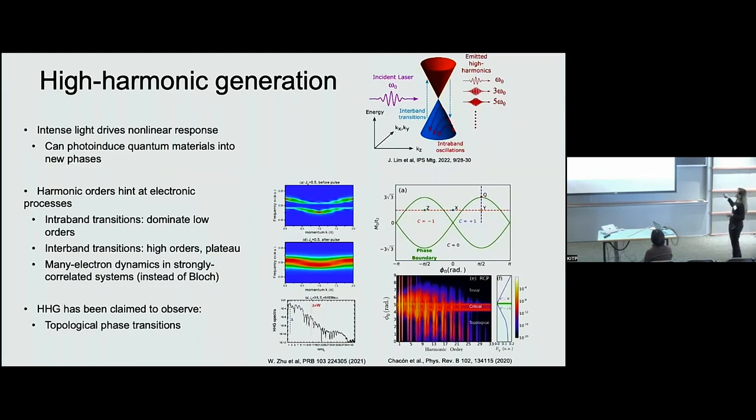So in a nutshell high harmonic generation is when you drive the system at some frequency omega naught and you drive transitions in the system that emit as harmonics of that incident frequency. So here this cartoon from this publication is showing an inversion symmetry preserved high harmonic response with only odd harmonics. But since we break inversion symmetry in our system, we expect to get all harmonics out.